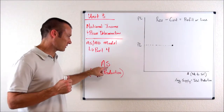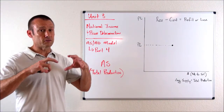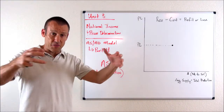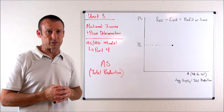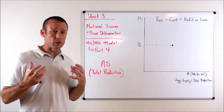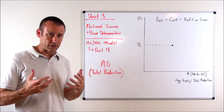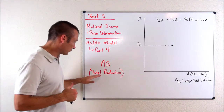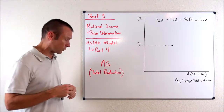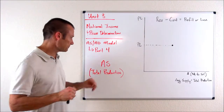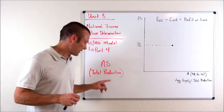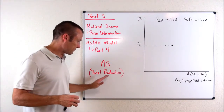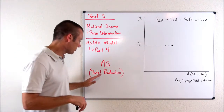Aggregate supply is our aggregation of all the suppliers of final goods and services — aggregating their production of goods and services. A synonym we're going to use a lot is total production. That's a term we're more comfortable with, so it's perfectly fine to substitute aggregate supply with total production in your own thinking.